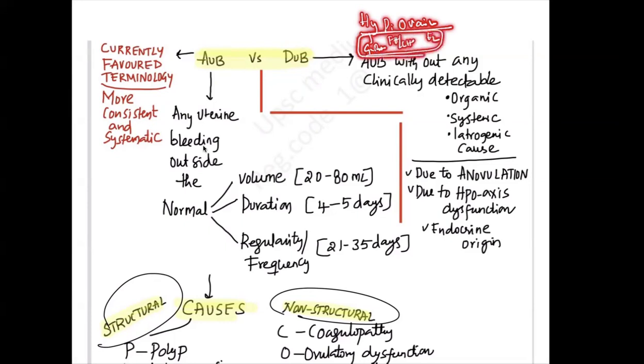If there is something wrong with these, what happens? The key step, that is ovulation, gets affected and ovulation does not occur if there are hormonal imbalances. So this anovulation due to HPO axis dysfunction is endocrinal or hormonal in origin. There is no organic cause, no systemic cause, no iatrogenic cause. The cause is purely anovulation due to HPO axis dysfunction.